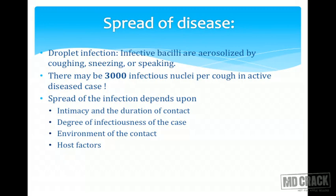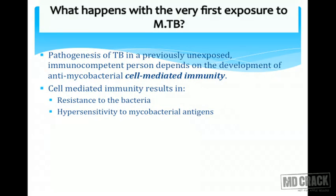Spread of tuberculosis disease is mainly through droplet infection. Infective bacilli are aerosolized by coughing, sneezing, and even speaking — as many as 3,000 infectious nuclei per cough in active tuberculosis cases, indicating a very high infectivity rate. Spread also depends on close intimacy of contact, total duration of contact, degree of infectiousness, environmental factors, and host factors.